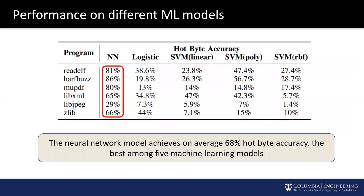We also compare performance on five different machine learning models: a neural network model, logistic regression, and support vector machine with three different kernels. The results show NeuTaint's neural network model achieves the highest hotbyte accuracy among the five machine learning models.